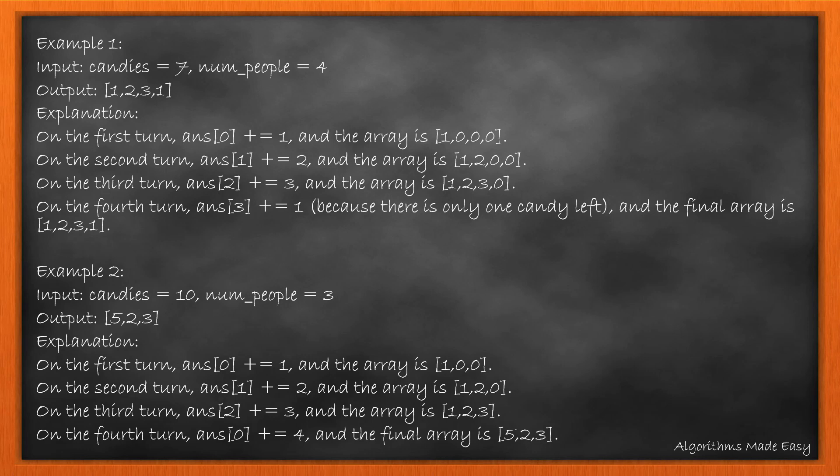Similarly, for example 2, we start with 1 candy, then 2, then 3, then come back to the first person and give them 4. After this, we run out of candies, so we stop.